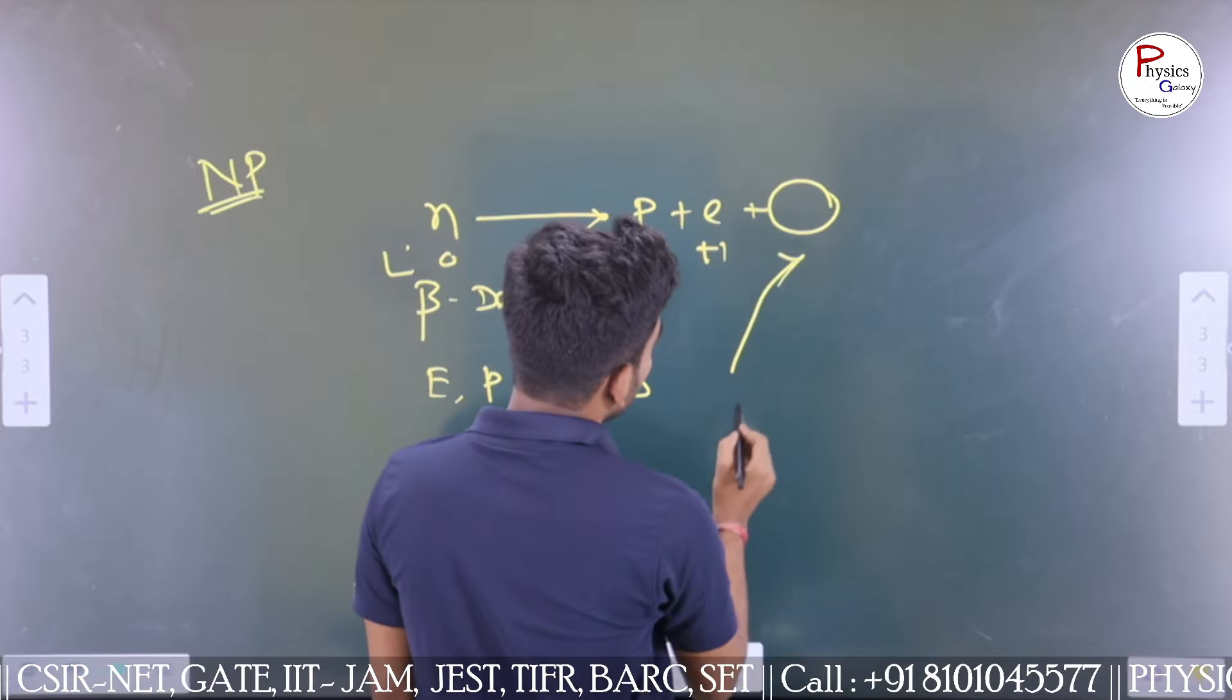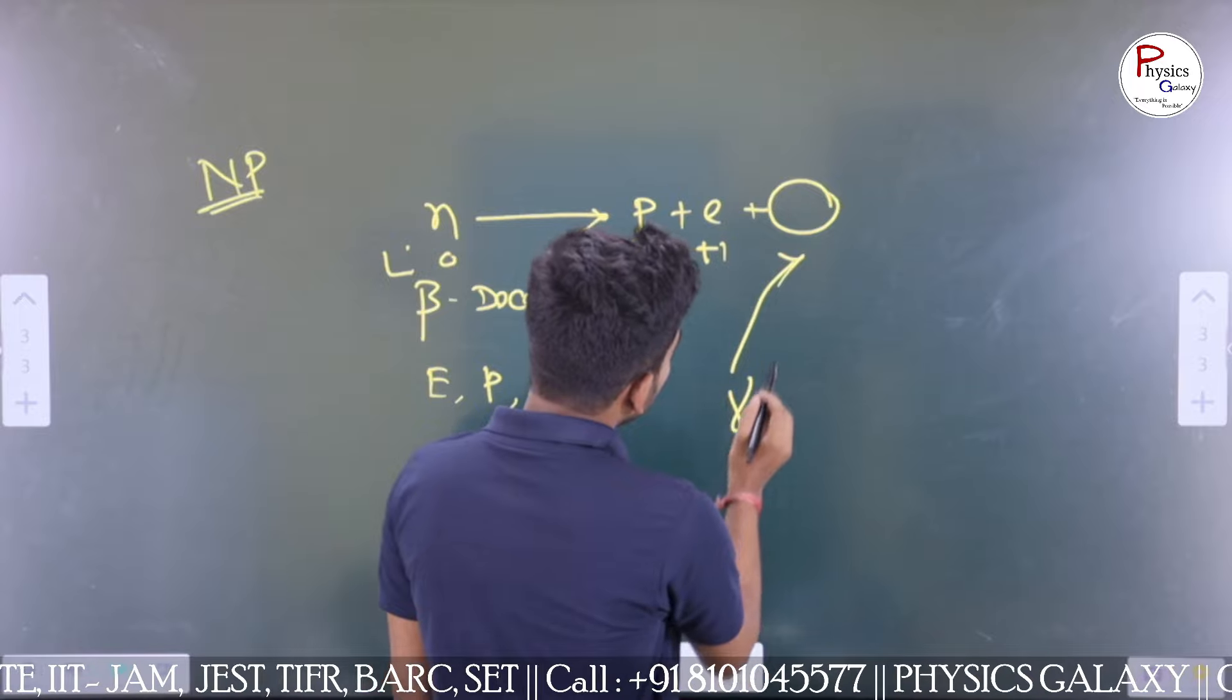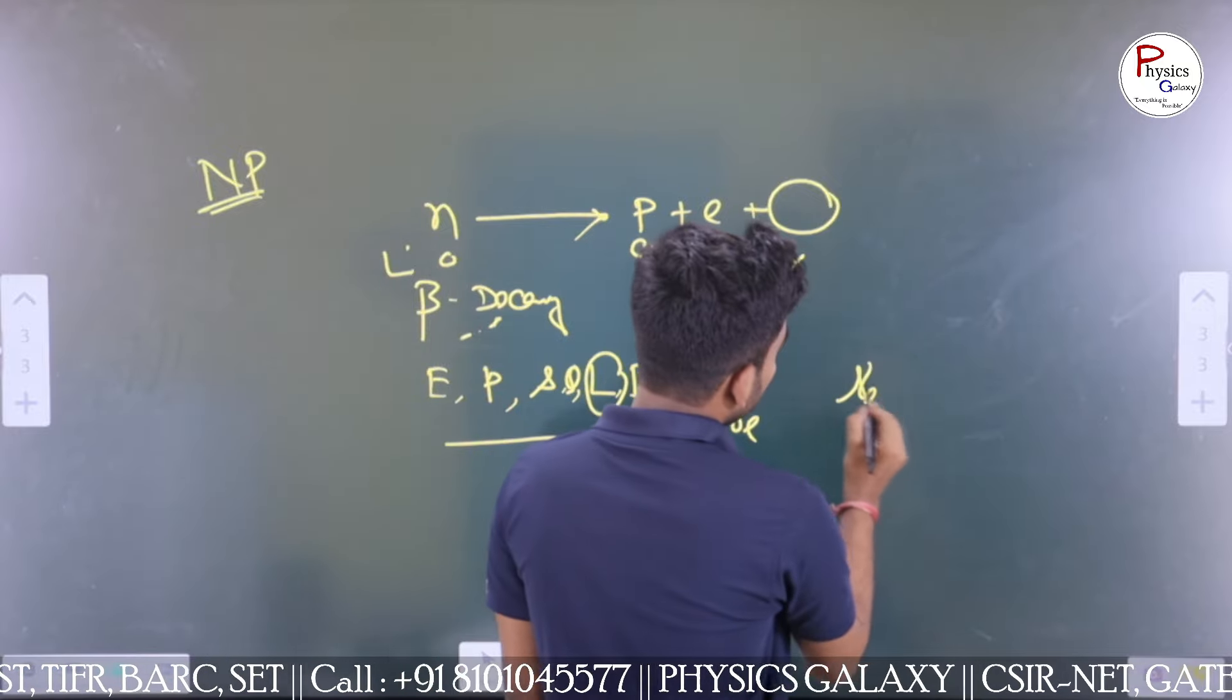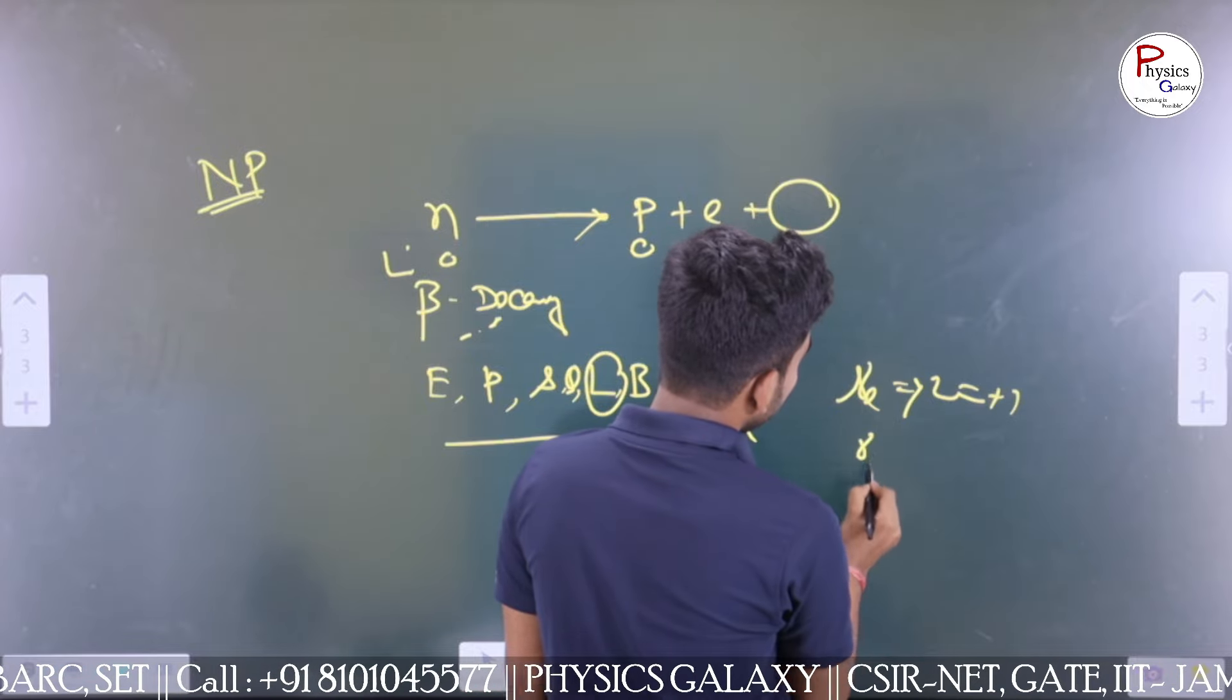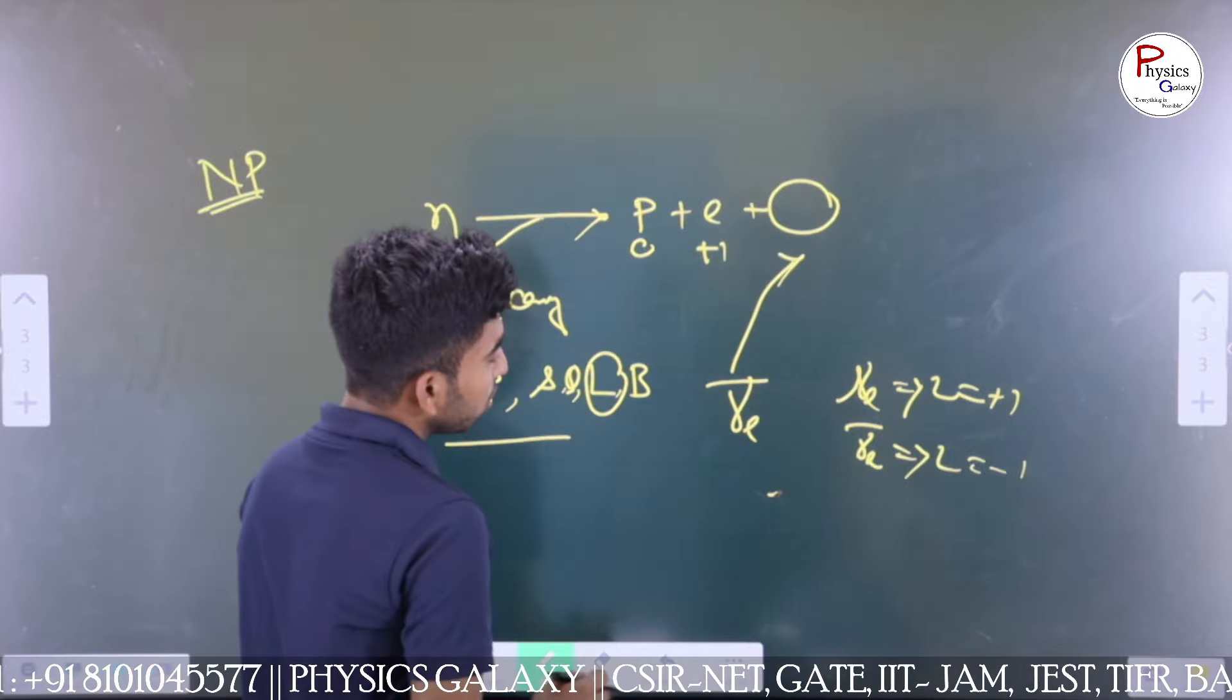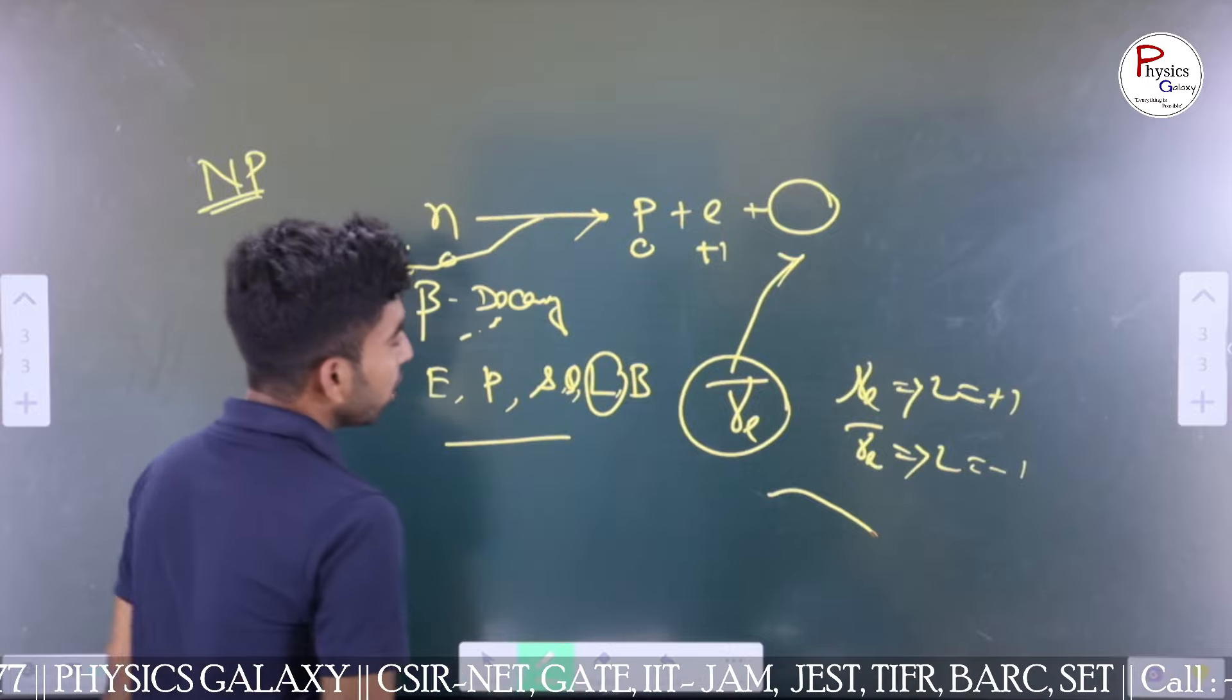From conservation of mass and energy, we introduce the neutrino particle. Then they said that actually we introduce the anti-neutrino, because neutrino's lepton number is plus one and anti-neutrino's lepton number is minus one. To make this conserved, we need the anti-neutrino particle here.